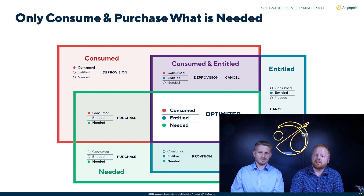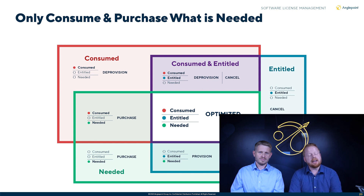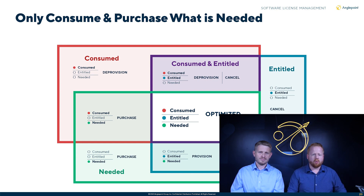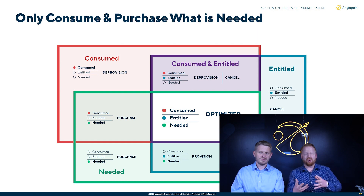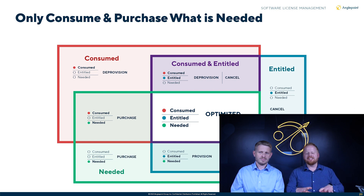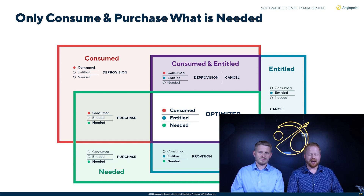That middle box is what we are consuming as well as what we're entitled to use. Thinking about the action words: if we're consuming something that we are not entitled to use, we need to deprovision or uninstall that software. On the flip side, if we're entitled to use something but we're not consuming it, why are we paying for it? Cancel support, cancel that — whatever you need to do to stop paying for that software in the future.